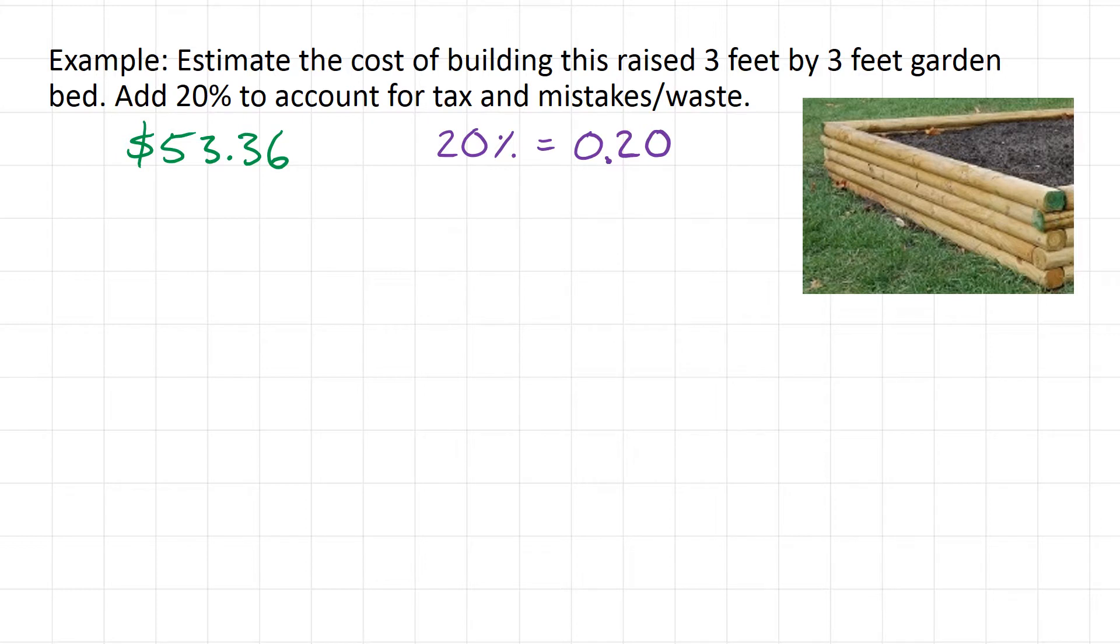So we move that decimal place over two spots. And with this as a decimal, we can calculate 20% of $53.36.